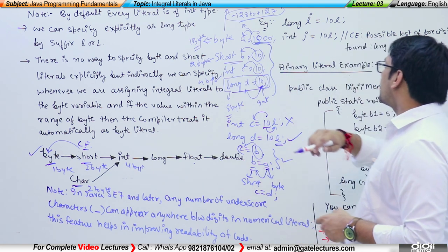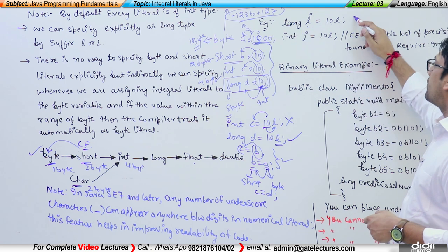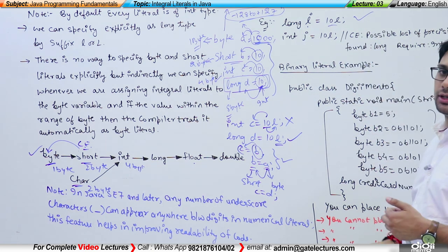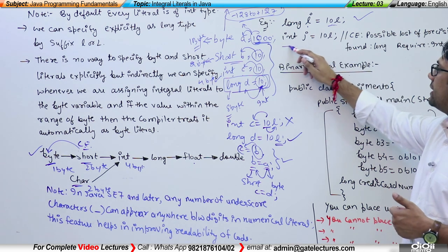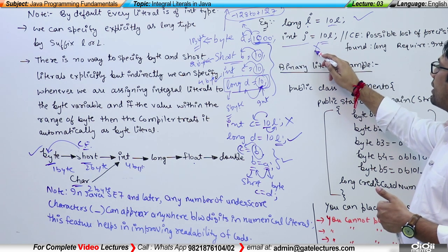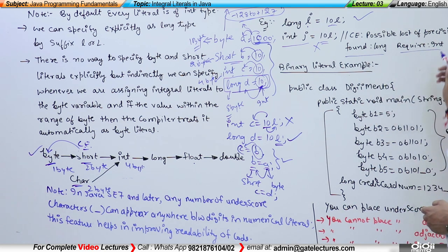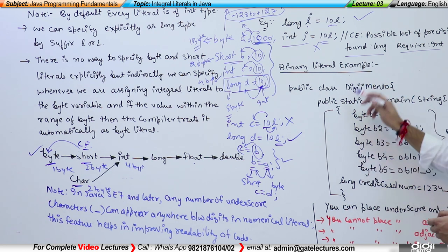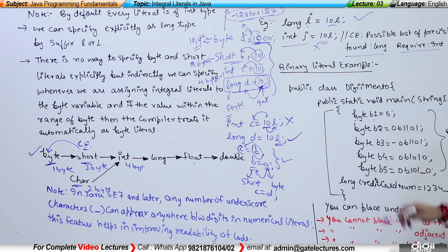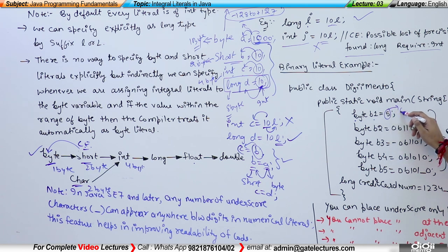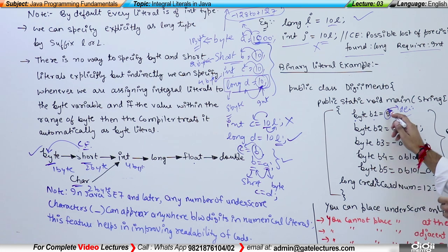Let me take a simple example: long i = 10L is perfectly fine because 10L is a long number. But integer j = 10L is not fine — it will give a compile-time error saying 'possible loss of precision: found long, but required integer'. For byte b1 = 5, since 5 is a decimal number in the range of the byte variable, it will be automatically stored without any error.